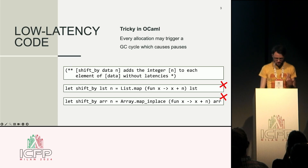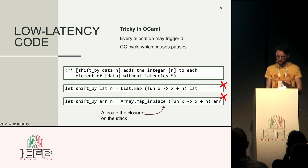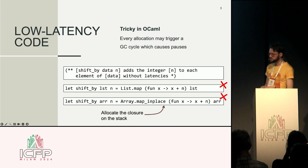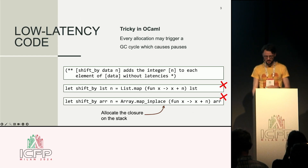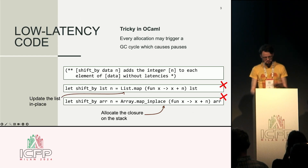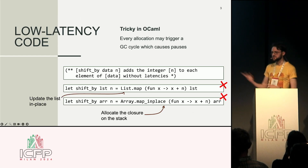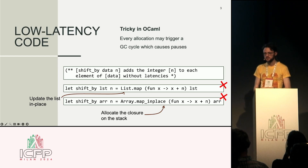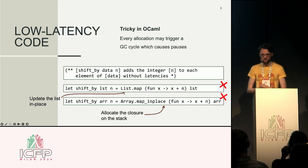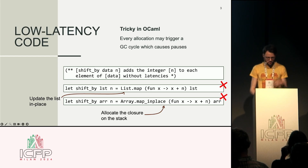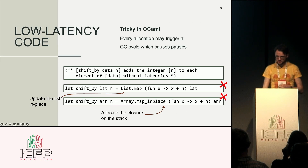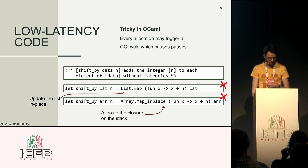What we want to do in this work is have the ability to allocate the closure on the stack, and maybe even update the list in place so that we could write the more functional version. So let's look at the first challenge: how can we do stack allocation in OCaml?